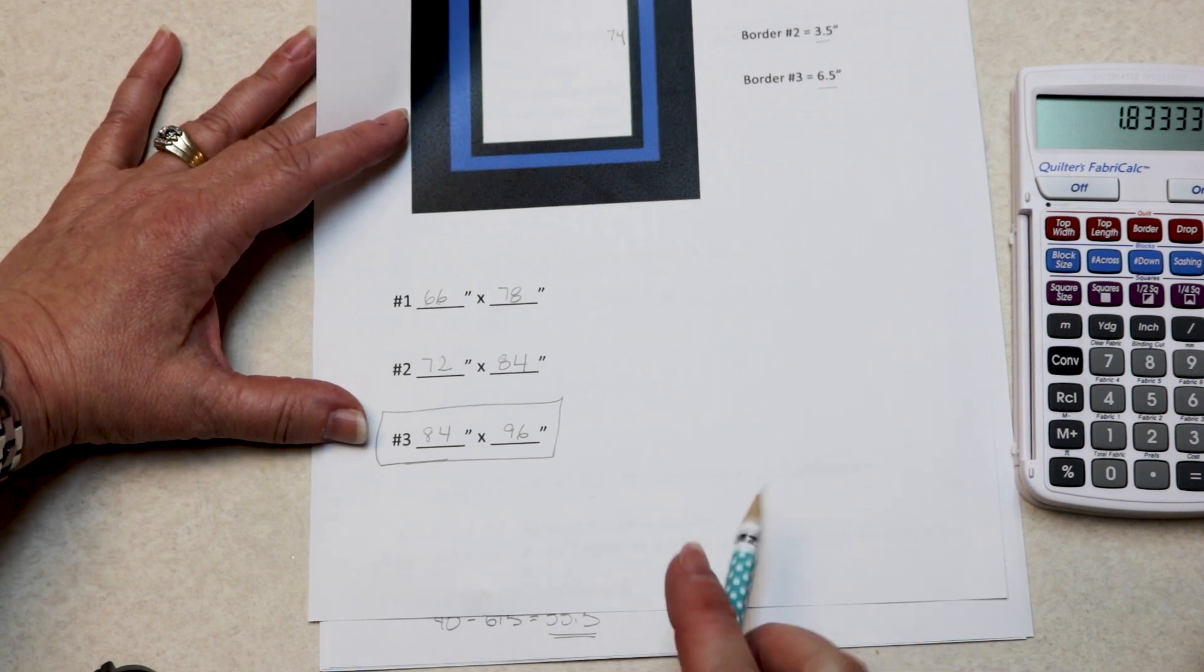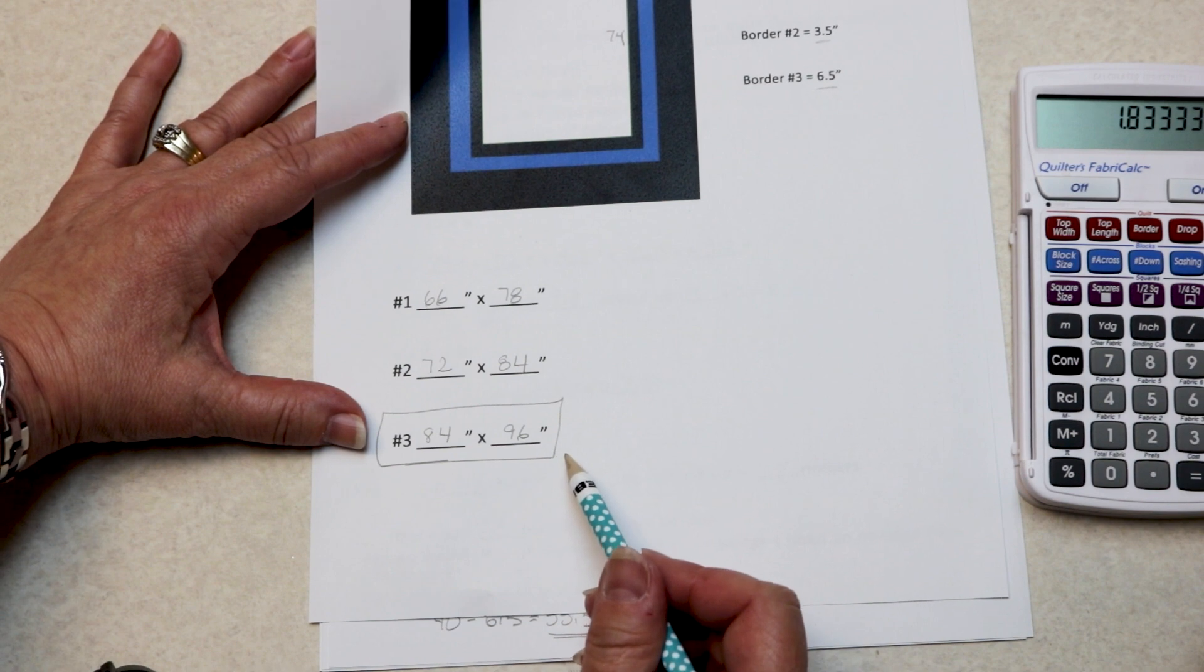In the next video, I'll show you how to figure out how much binding you need. Thank you for joining me for How Tuesdays. I hope you enjoyed learning how to do simple math for quilters—how to figure out how much fabric you need for borders. I hope you'll download the free worksheet and try it yourself. And join me for the second video in this series where I will show you how to do simple math to figure out how much binding you need for your quilt.